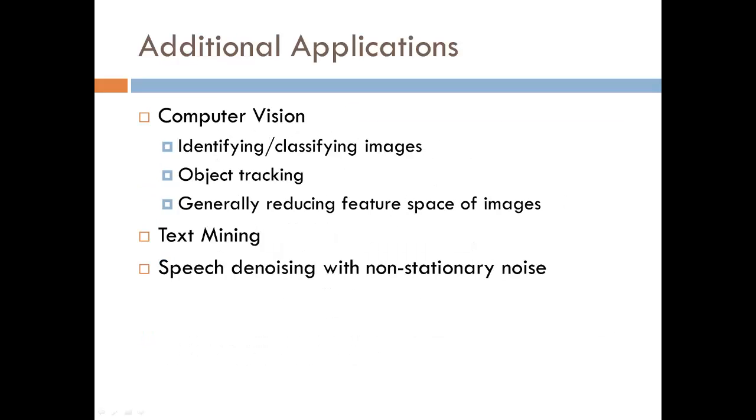Non-negative matrix factorization is beginning to be used in many fields. As with my earlier example, it has a use in computer vision for reducing the feature space of images. This can be useful in identifying and classifying images. It is also used in text mining. For example, you might organize a series of documents into a matrix where each row is the frequency of a particular word and each column is a single document. Then you would extract semantic features about the data. Lastly, NMF is being used to break audio recordings of speech down into speech parts and variable noise parts so that the speech parts alone can be isolated.